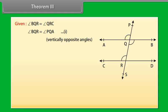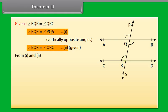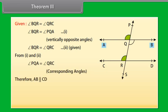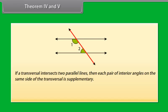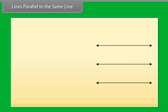Using the converse of the corresponding angles axiom, we can show two lines are parallel if a pair of alternate interior angles is equal. Transversal PS intersects lines AB and CD at Q and R such that angle BQR equals angle QRC. Angle BQR equals angle PQA because these are vertically opposite angles — mark it as one. But angle BQR equals angle QRC — given, mark it as two. From one and two, angle PQA equals angle QRC. But they are corresponding angles, so AB is parallel to CD by the converse of the corresponding angles axiom. Theorem 3: if a transversal intersects two lines such that a pair of alternate interior angles is equal, then the two lines are parallel.